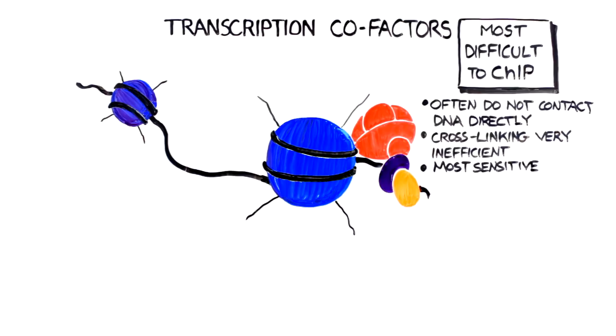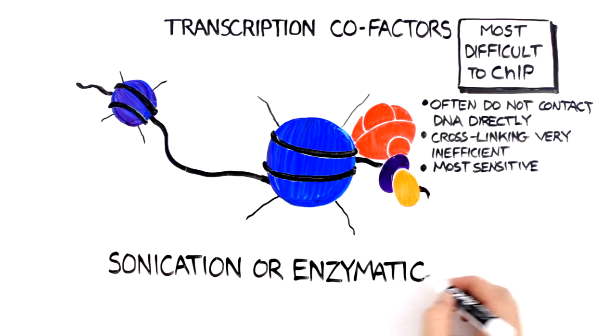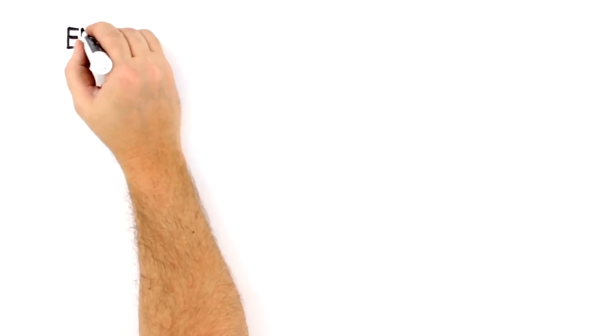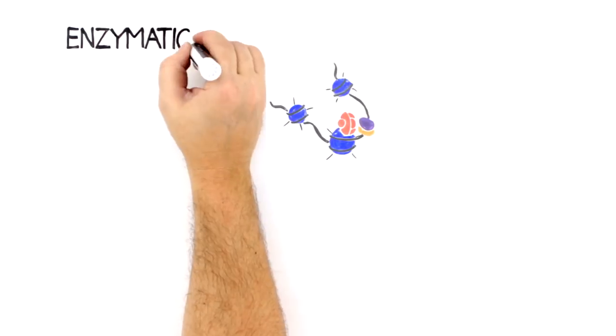Understanding which type of target protein you are studying will help you choose the most appropriate chromatin fragmentation method, either sonication or enzymatic digestion. Both methods are effective at breaking cross-linked chromatin into smaller fragments, which is necessary to allow for efficient immune enrichment.